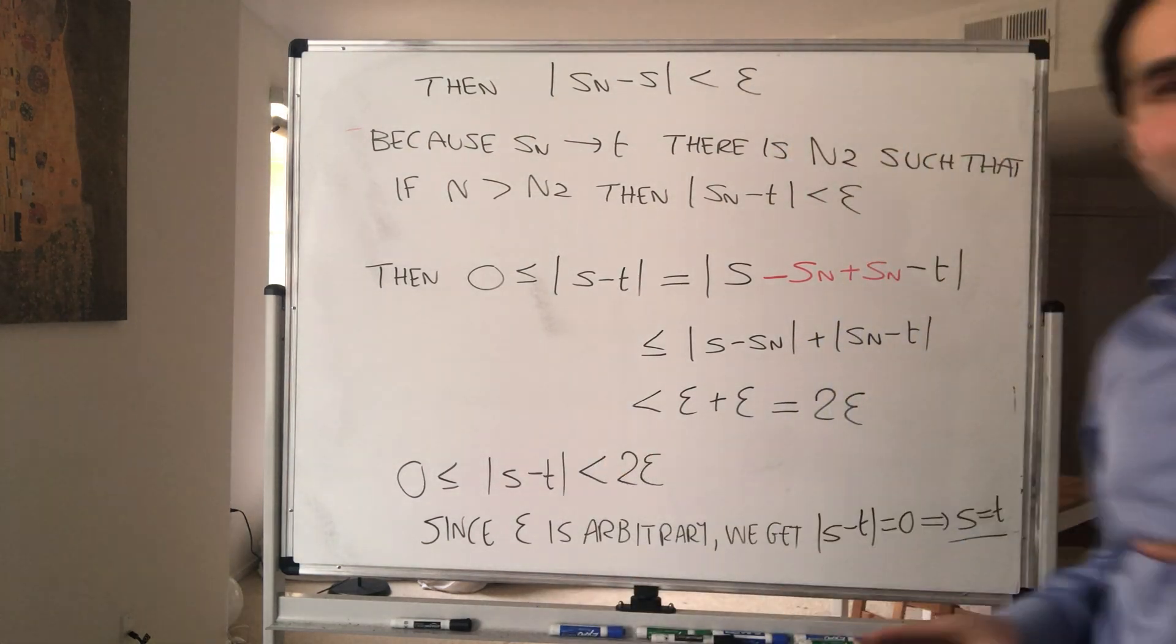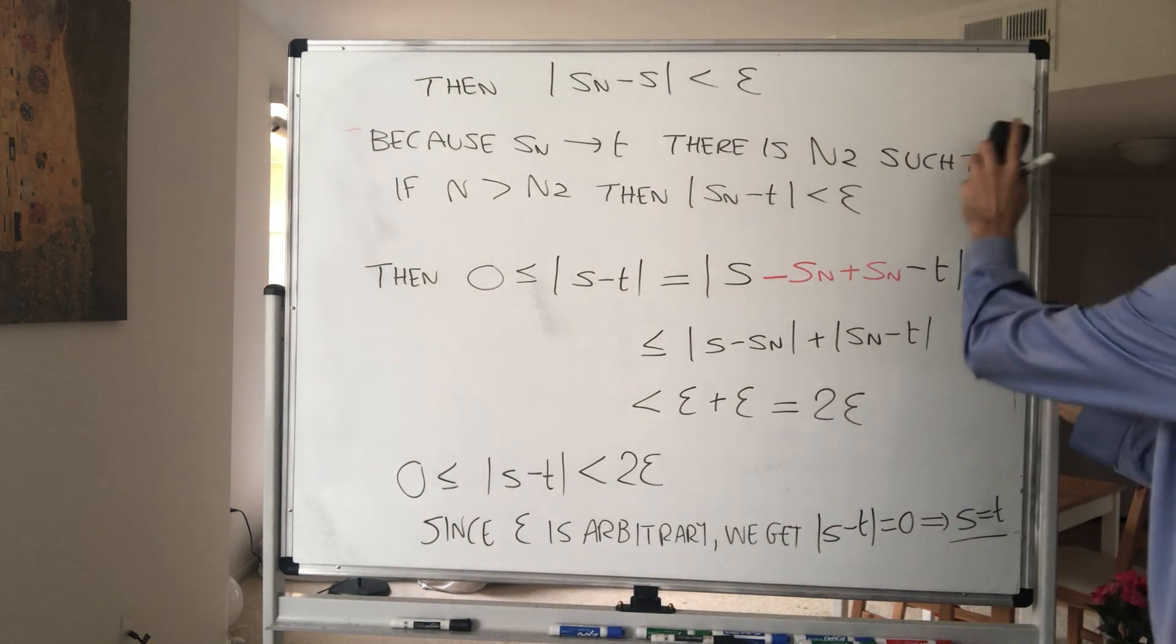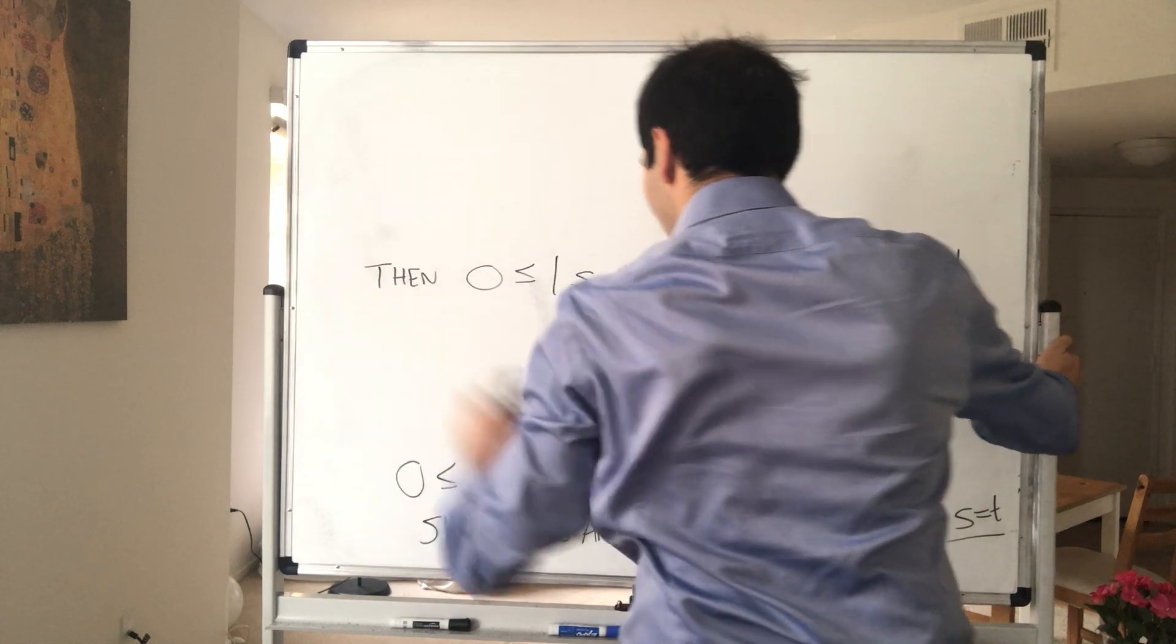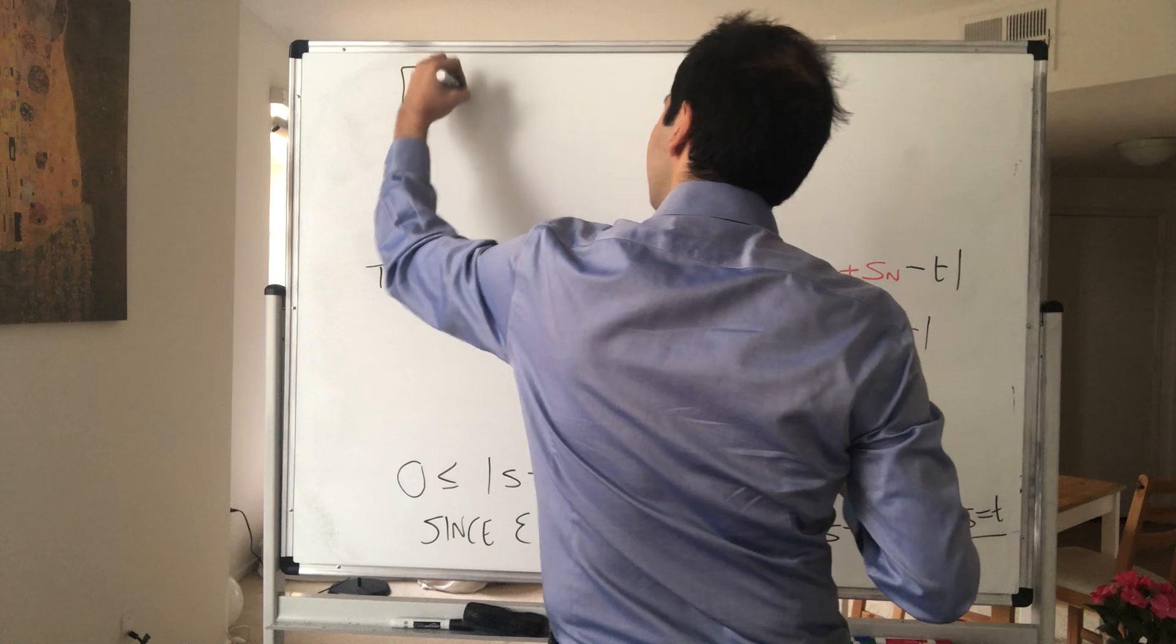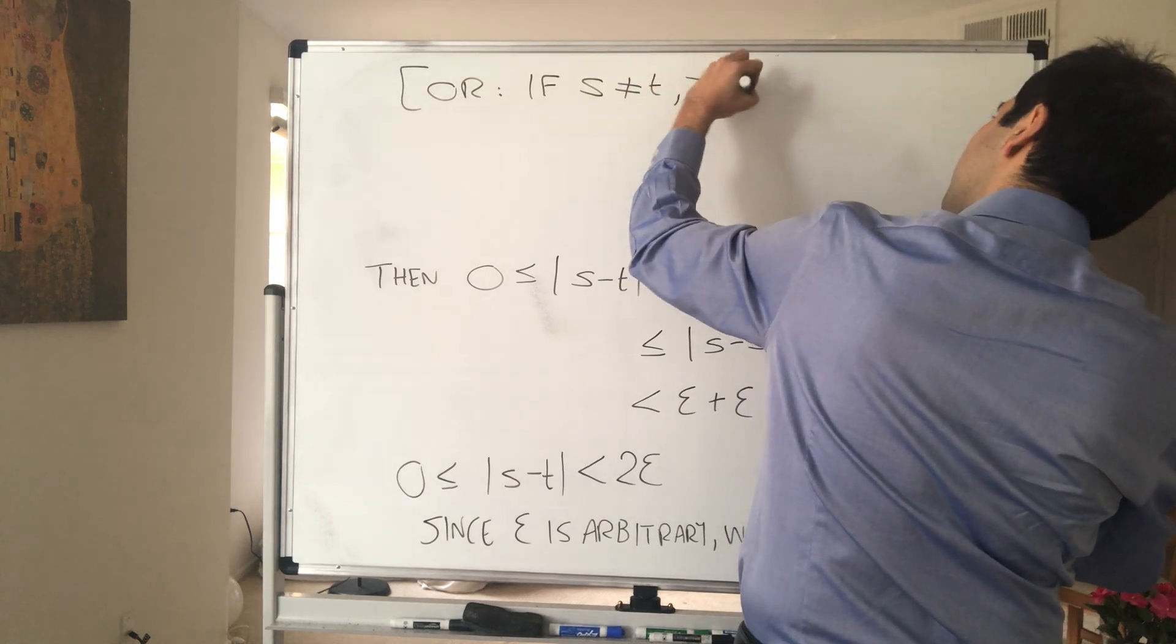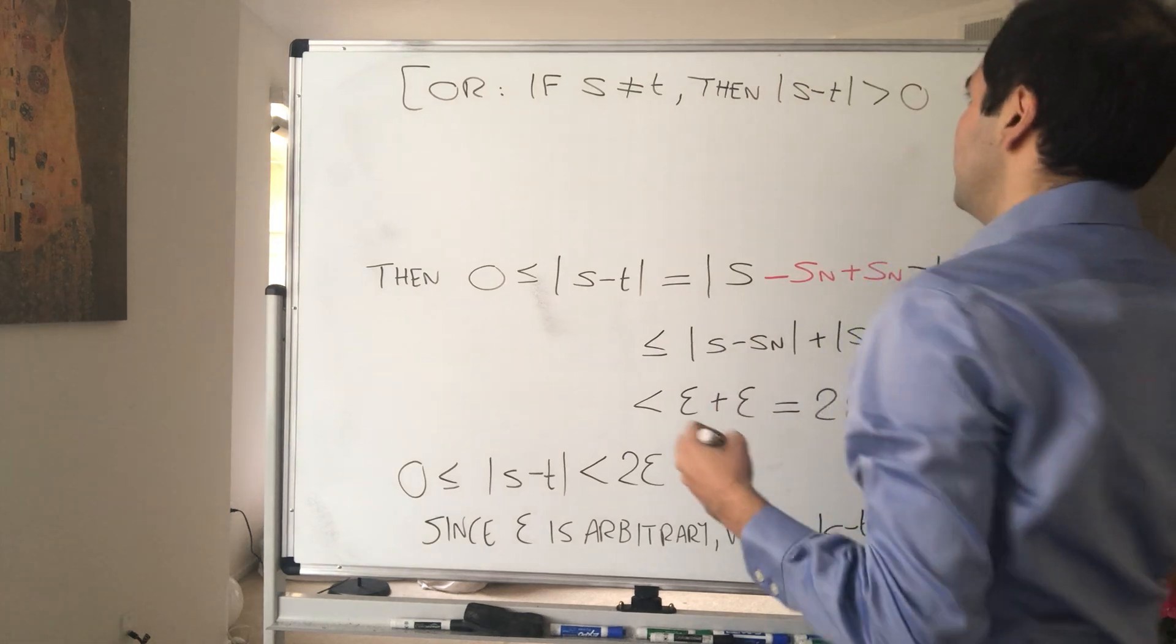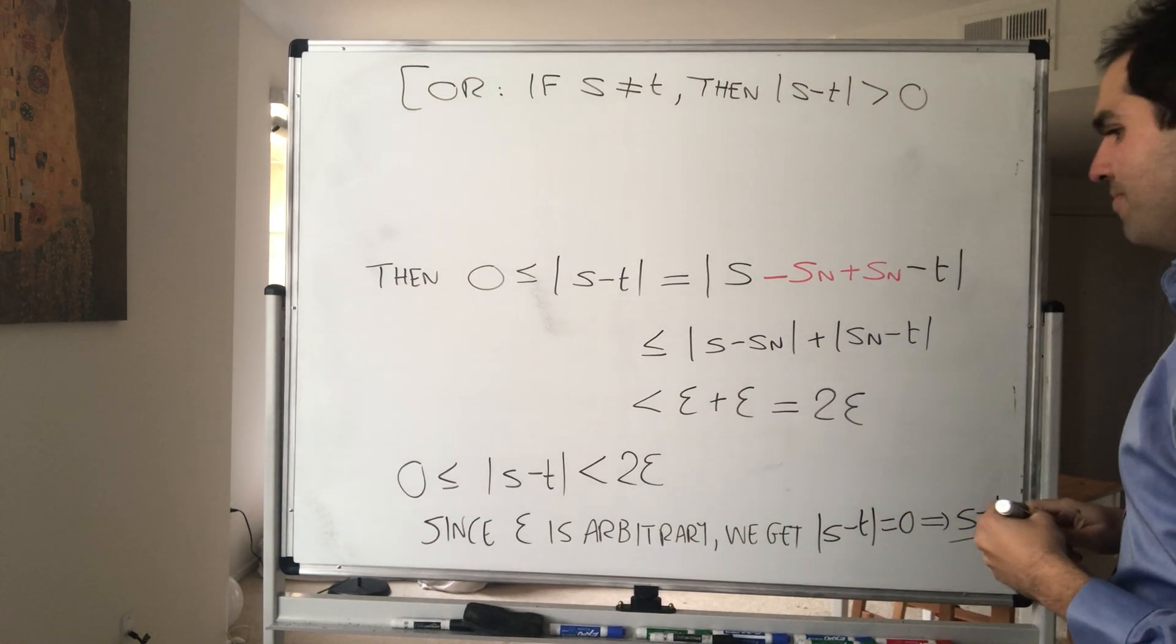Now, if you're not impressed by this last argument, I do have a slightly more elegant way. Do it as follows. Do it by contradiction. So if S is not equal T, then the absolute value, you see, that's strictly positive, because the only way could be 0 if S equals T. And then, well, look,